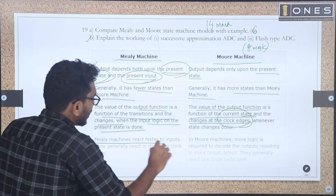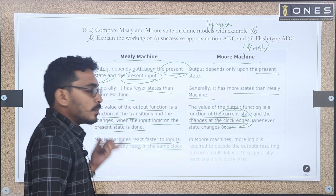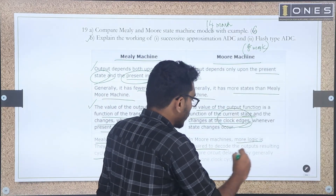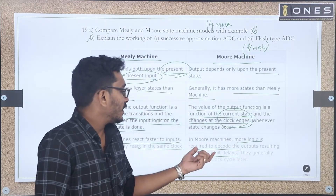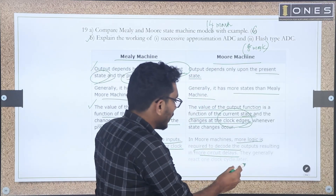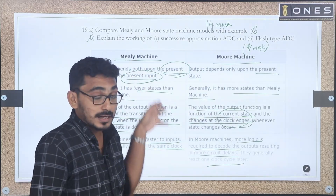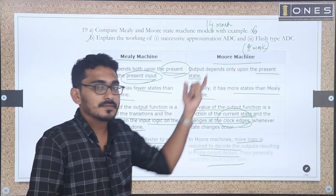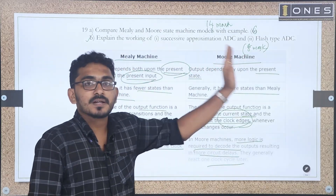Mealy machines react faster to input; they generally react in the same clock cycle and respond quickly to input. More logic is required to decode the output in Moore machines, resulting in more circuit delay. If you want to include the block diagram for each, you will get full marks — so 3 plus 3 is 6 marks.